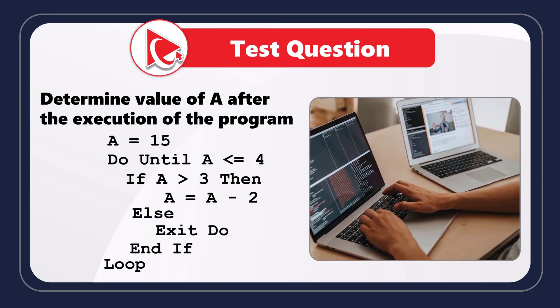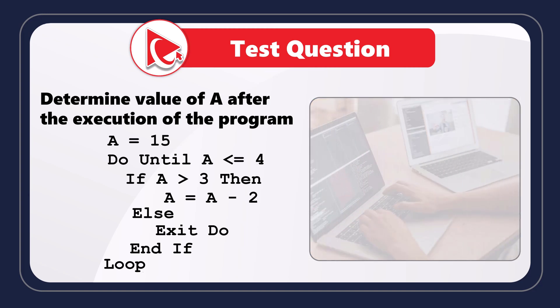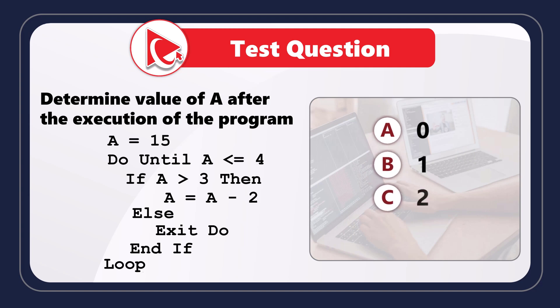When you finish the calculation, you need to select the final value of A out of 4 possible choices: choice A is 0, choice B is 1, choice C is 2, and choice D is 3.